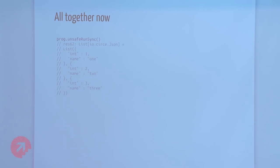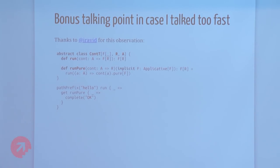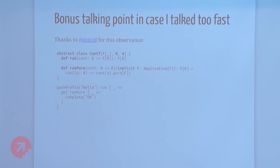I had a bonus talking point in case I talked too fast. User Itamar Avid observed that the Cont-T monad ends up looking a lot like Akka HTTP directives. So if you're writing Akka HTTP services but interested in this functional style of programming, HTTP directives would be something inside a Cont-T applied to HTTP, and then you'd be able to do all this composition and combination just the same as with routing. It's an alternative way of looking at routing — I thought it was a neat observation.